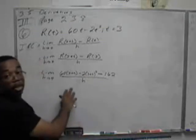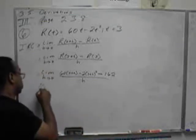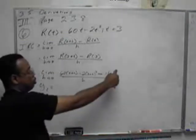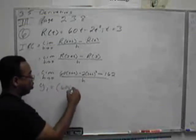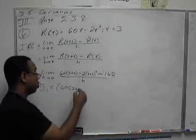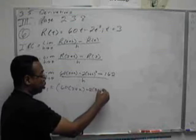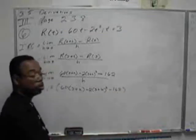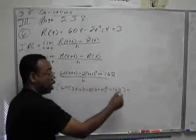Next, we need to put this into the calculator, and we're going to put this in as y1 equals. We're going to need a parenthesis for the entire numerator, so open parenthesis, 60 open parenthesis 3 plus, the calculator doesn't have h so we're going to use x instead, x minus 2 times 3 plus x all squared, minus 162, close numerator, and then divide it by x.